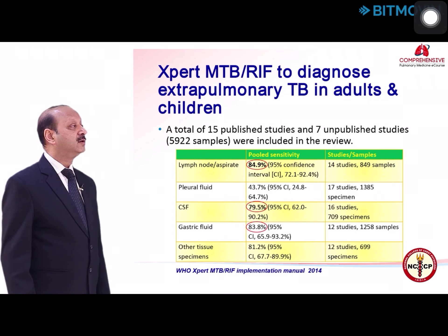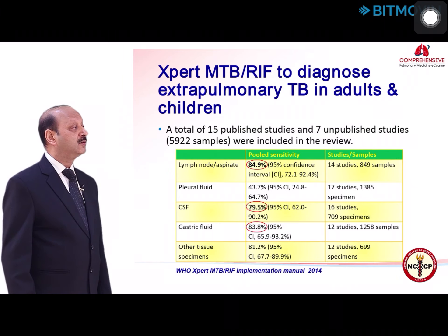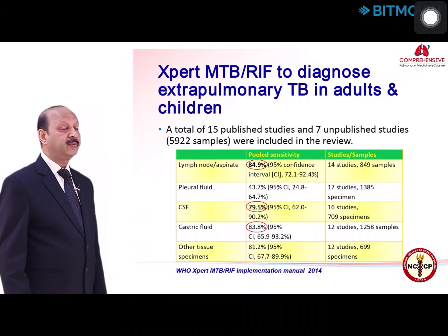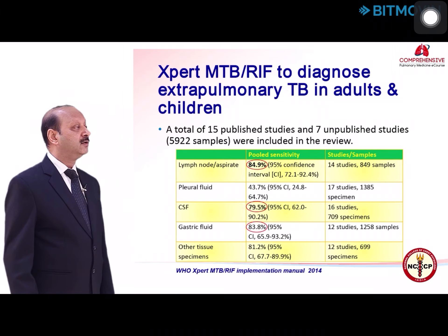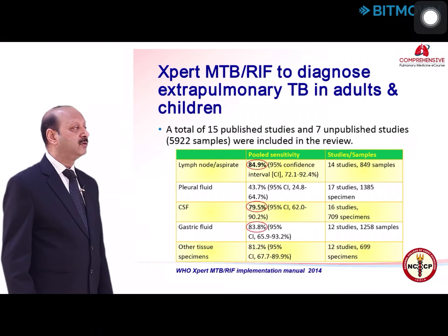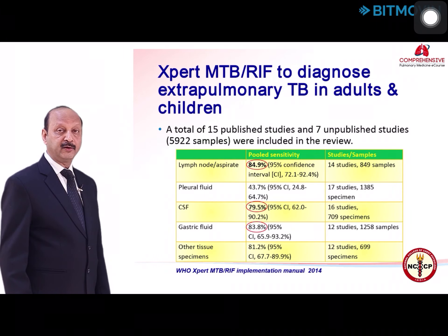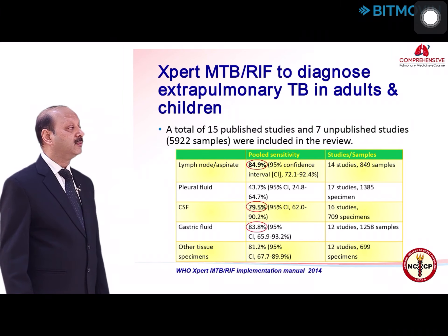For extrapulmonary tuberculosis cases in adults and children, GeneXpert is very good for lymph nodes and CSF, showing 84.5% and 79% sensitivity among culture-positive cases respectively. For gastric aspiration, especially in children, it gives almost 83.8% sensitivity. However, it is not very good for pleural fluids.